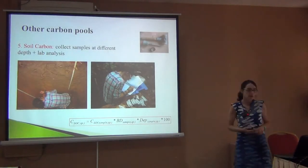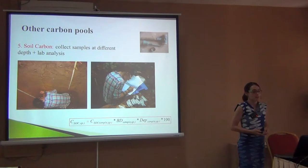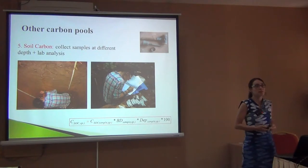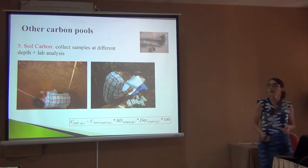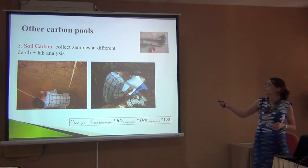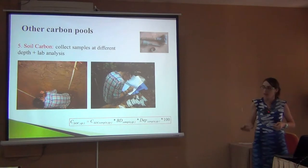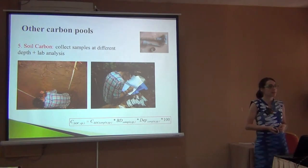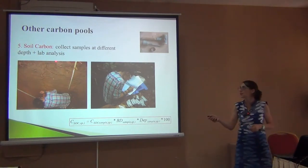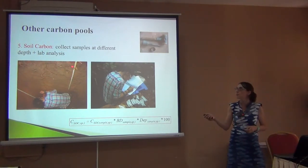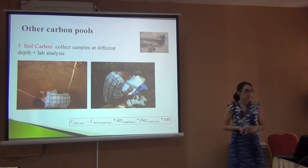Next, the soil. How do we measure the soil? It's pretty straightforward. You take a sample of a known surface — that's why we use these cylinders at different depths. Then you take it to the lab to determine the carbon. In general, there's more carbon at the surface than at the bottom.